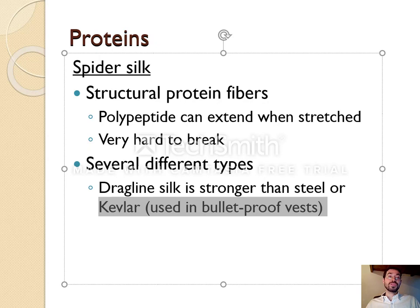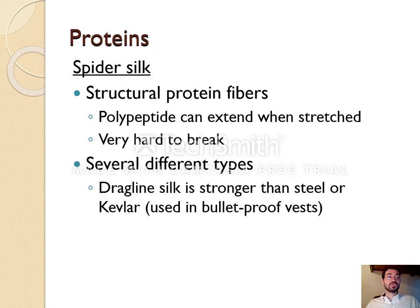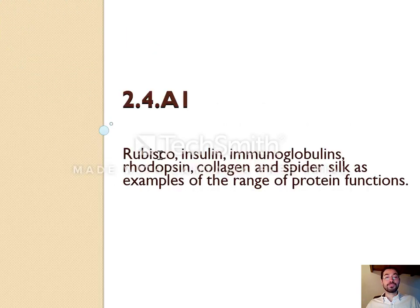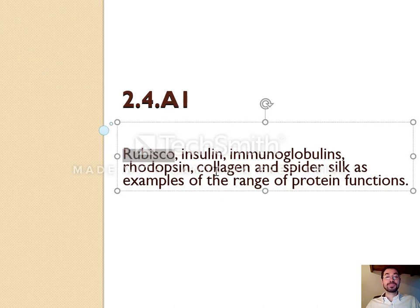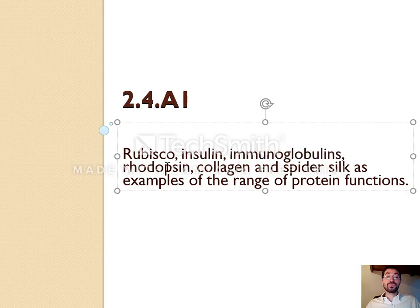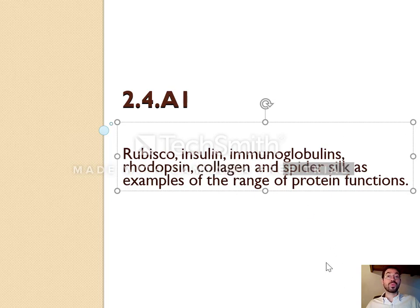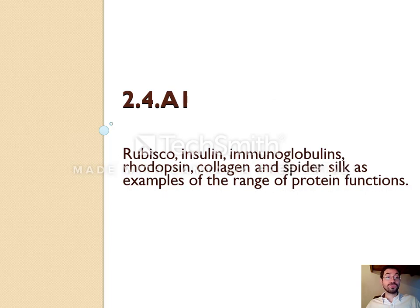So those are six examples of proteins you are required to know. Rubisco is an enzyme. Insulin is a hormone. Immunoglobulins are antibodies for your immune system. Rhodopsin is a receptor to detect light. Collagen is a structural protein to hold your skin together. And spider silk makes spider webs and is also a structural protein. That's about all you need to know about them.